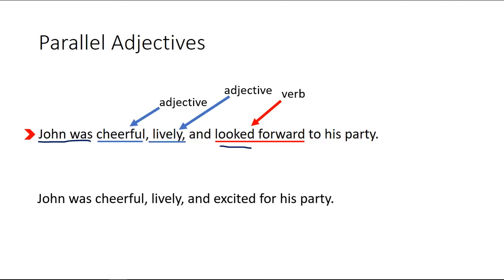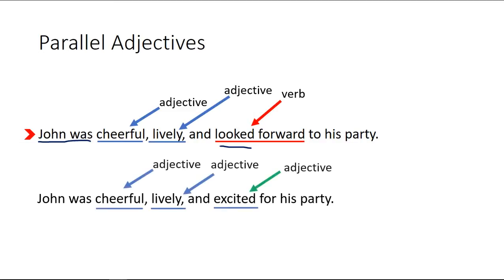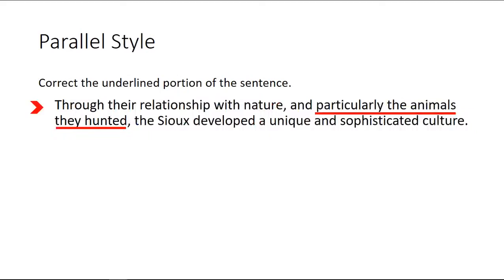Here's the correct version: John was cheerful, lively, and excited for his party. If you check with the trick again — John was cheerful, John was lively, and John was excited for his party — that sets up our parallel structure, and that is correct.